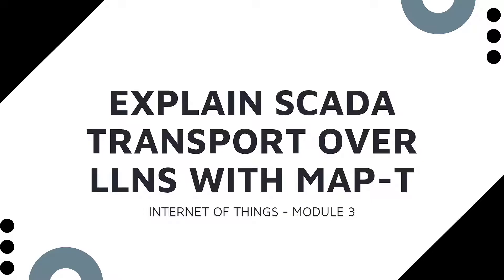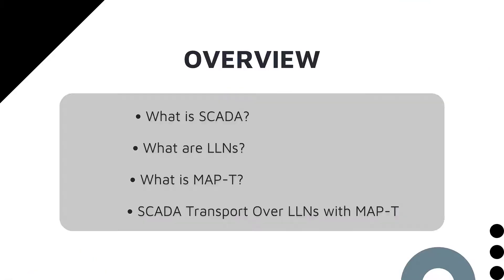In module 3, the important question is: how do I explain how to transport over LLN with MAP-T? How to explain how to transport over LLN with MAP-T?